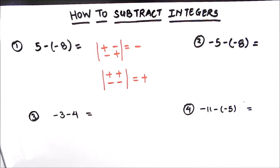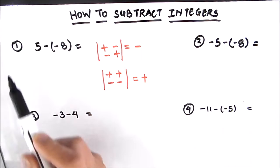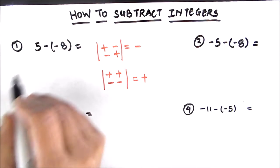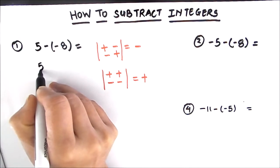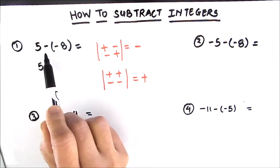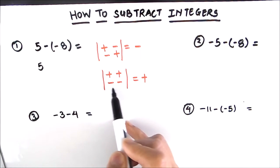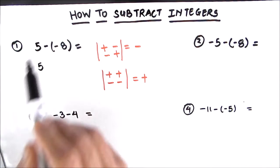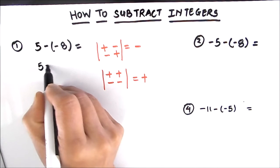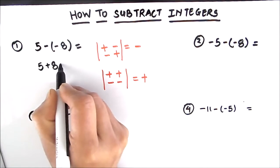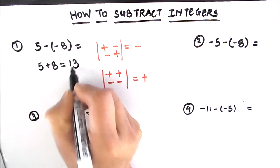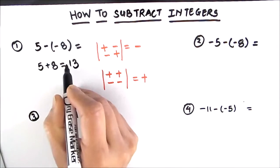So let us solve a few examples to clarify this. Our first example is 5 minus negative 8. First, we copy 5, then we have two negative signs together. When there are two negative signs together, the sign changes to positive, so we get plus 8. We are going to add the two numbers: 5 plus 8 is 13. That is our final answer.